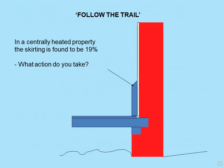So how can we use a moisture meter? Let's consider 'Follow the Trail'. Imagine we're looking at a centrally heated property and the skirting is found to be 19%. If the skirting fixed to a wall has that moisture content, it's likely that the wall itself is damp. The real question is where it's damp and whether it's even more damp lower down in the wall. We then need to look at areas in the subfloor where timbers may be in contact with such dampness, which if high enough may lead to rot or the wood may already be rotting.